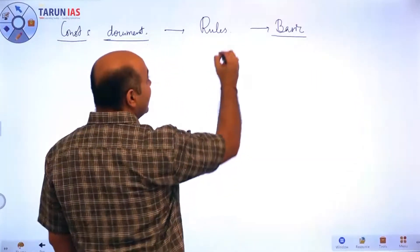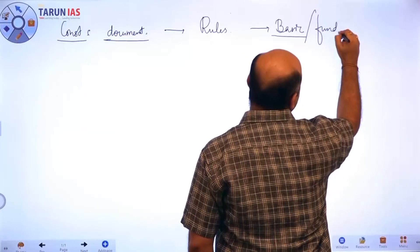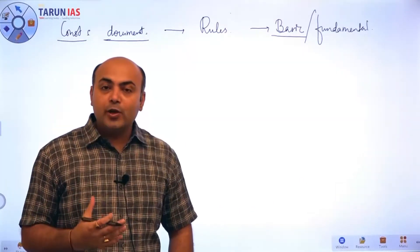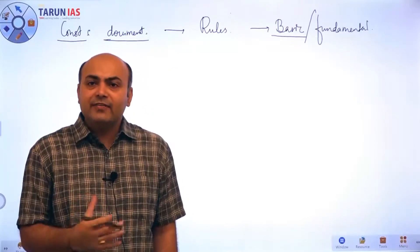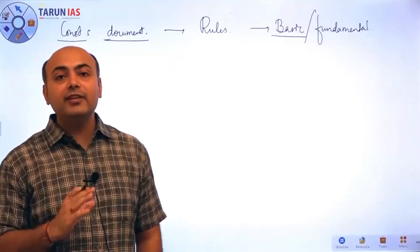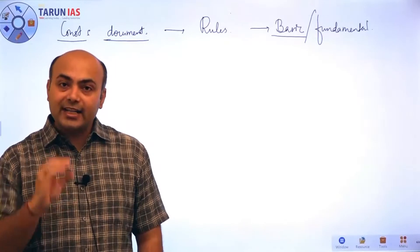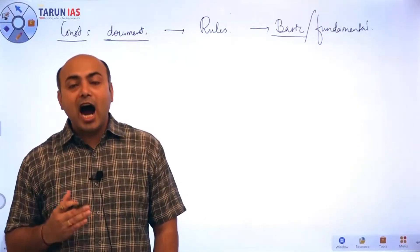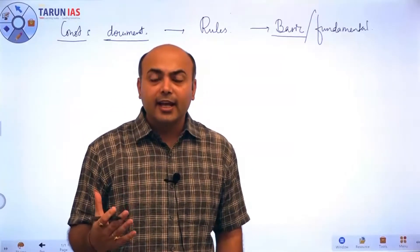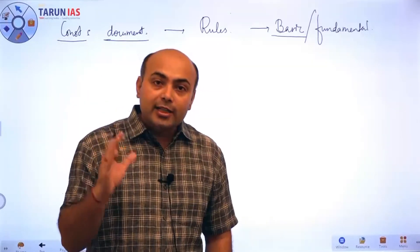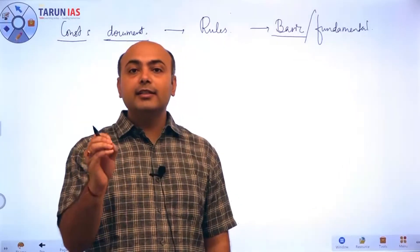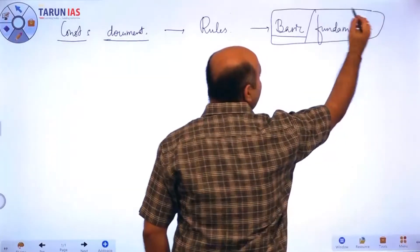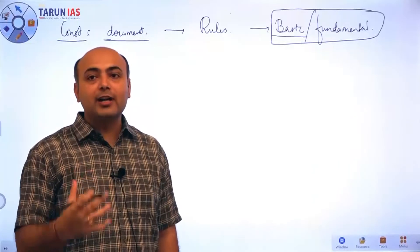Constitution is a set of basic or fundamental rules. Just like every game, every extracurricular activity, and everything we do in life generally follows a set of rules — similarly, when we talk about a country and how it is governed, a country cannot run in a haphazard manner. Running a country also requires a certain set of basic rules. Constitution is basically the compilation of these basic or fundamental rules.